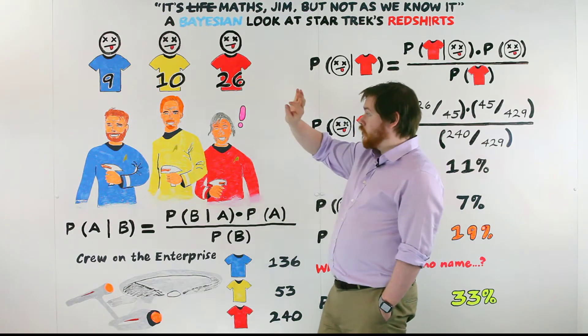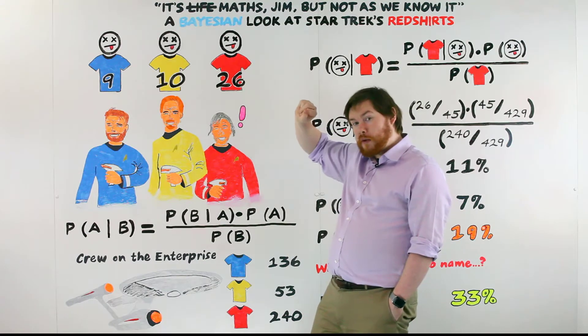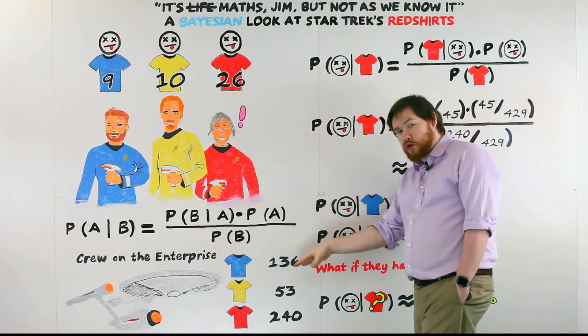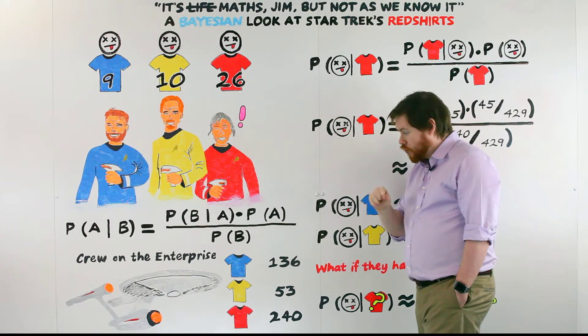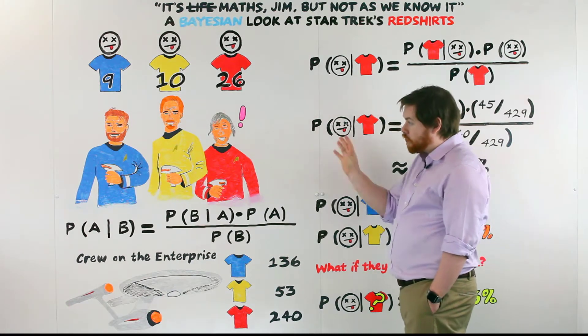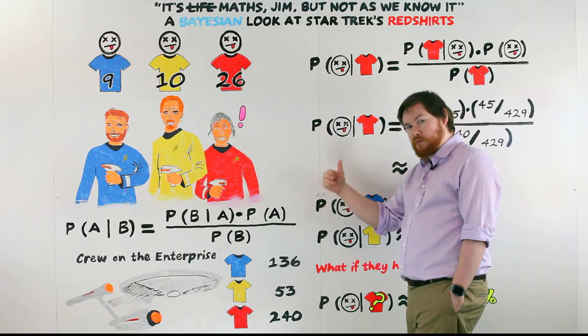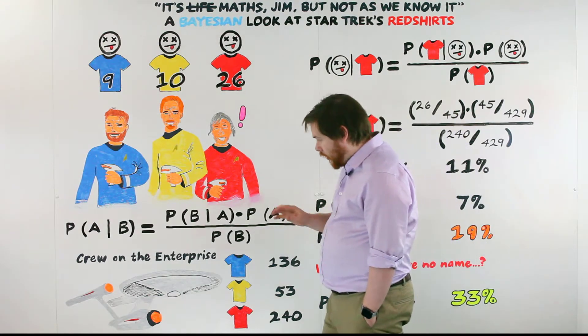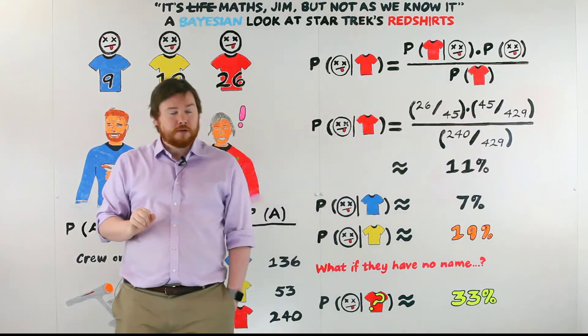So to do that we're going to need our information here about who died, and also some information about the total breakdown of the crew on the Starship Enterprise. So if we take that information and Bayes' theorem, which I'll explain in a moment, we can then try and calculate how concerned each of these people should be.